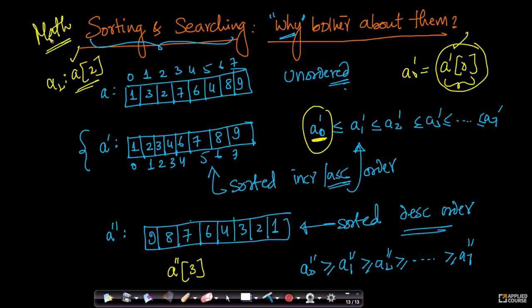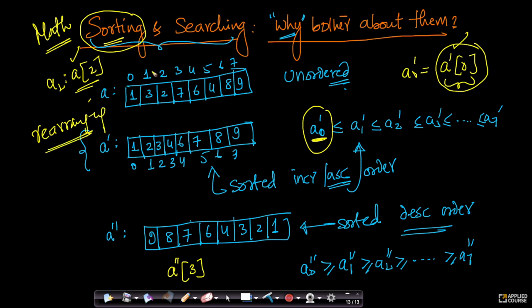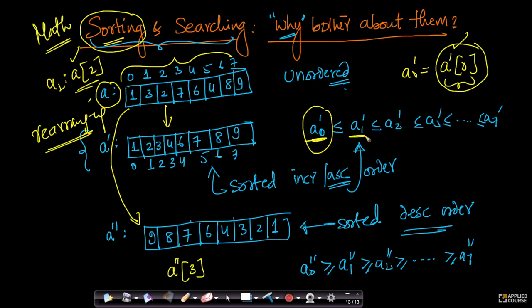Having said that, now we understand what sorting is. Sorting is the task of rearranging the elements of an array in either ascending or descending order. Mathematically, you rearrange the elements such that the first element is less than or equal to the second, which is less than or equal to the third, and so on. That is the definition of sorting — very simple, nothing fancy.